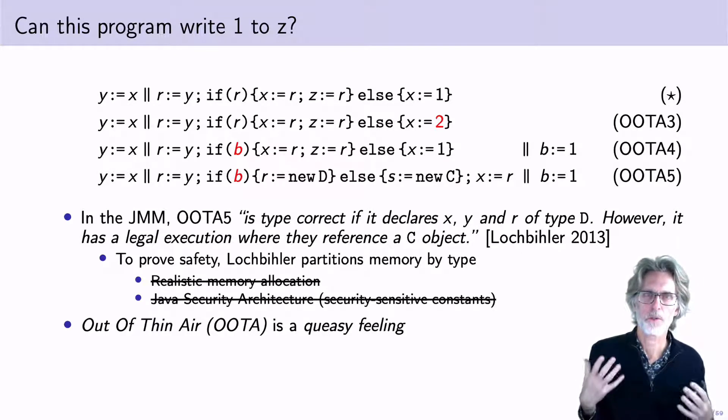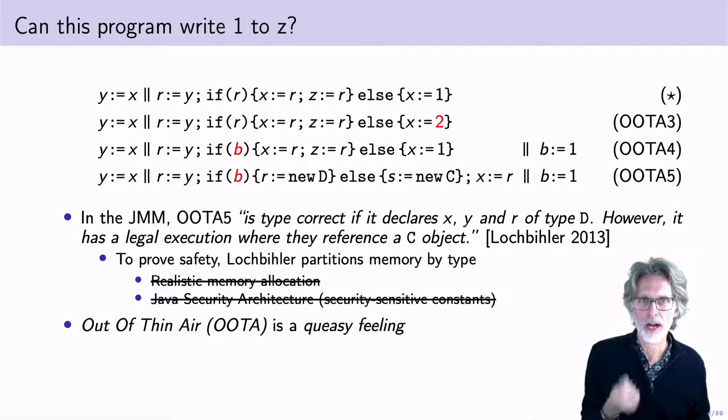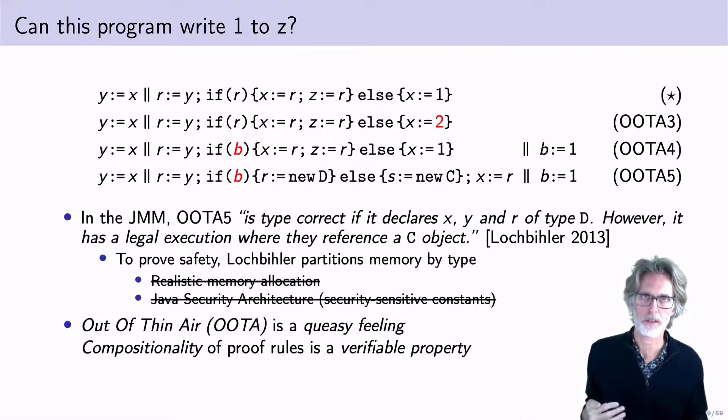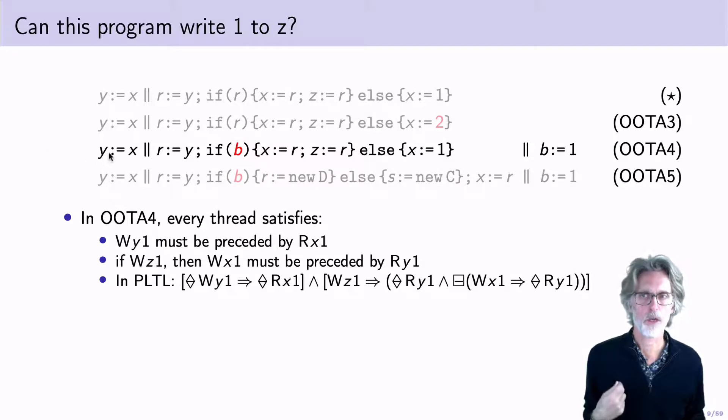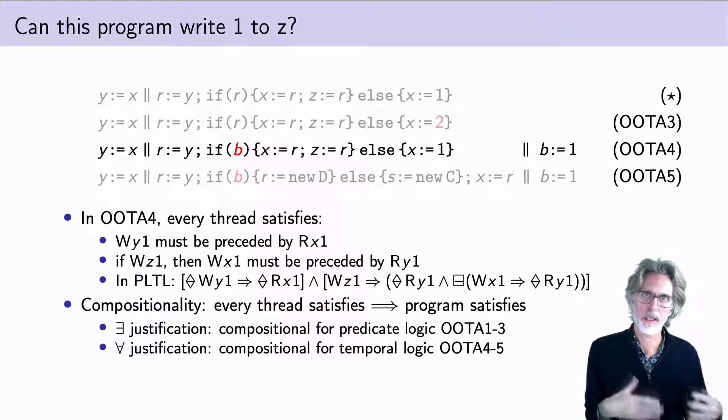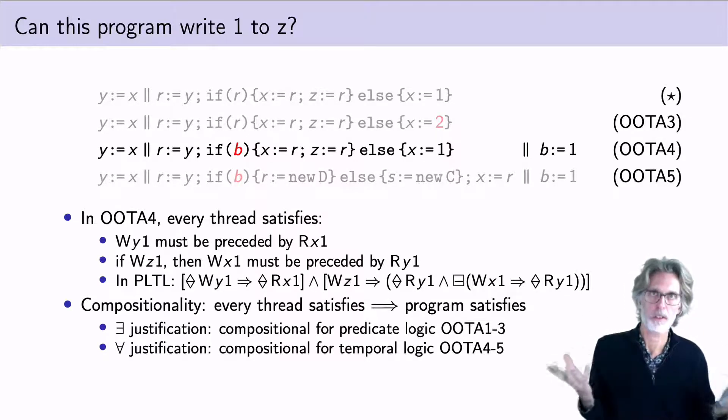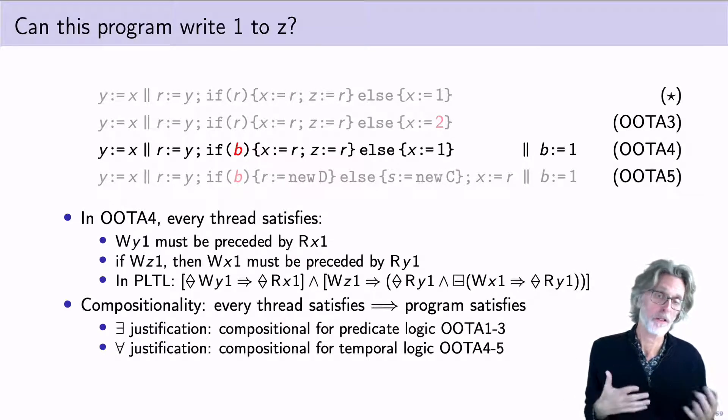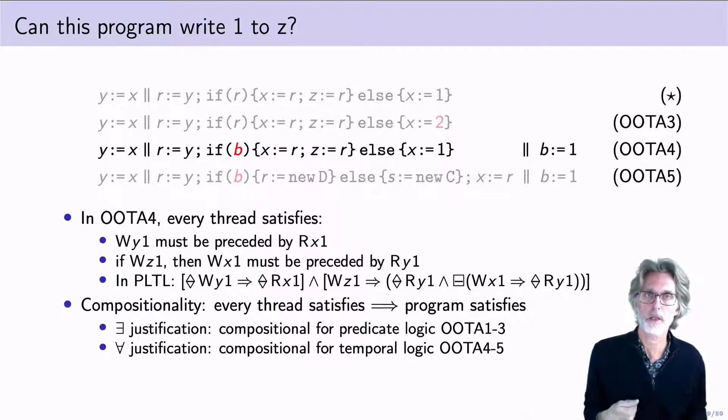We believe this is the wrong focus. What we should be looking at is what kind of logics we can use to reason about our programs, and what kind of compositionality results we get for those logics. In UTA4, for example, I have that any write of 1 to y must be preceded by a read of 1 from x. And in the case that I write z, then any write to x must be preceded by a read of y. We can write this out in propositional temporal logic. And given this, we can ask the question, given that every thread satisfies this property, does it hold for the whole program? For weak models, we can establish compositionality for something like propositional logic. But it's not going to happen for a temporal logic, as UTA4 shows. But for the strong models, I can actually prove or give compositional proof rules for programs like UTA4 and UTA5.